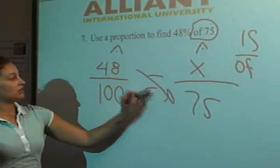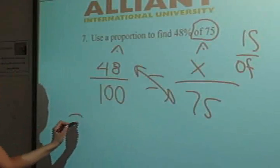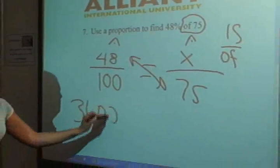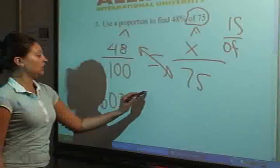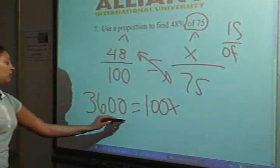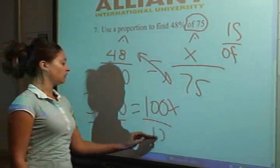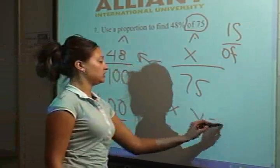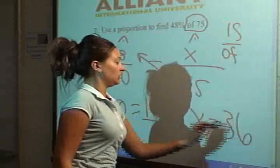Now since we have an equal sign, we need to cross multiply giving us 3600 equals 100x. Now we are going to isolate our variable by dividing by 100 giving us x equals 36.